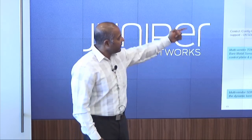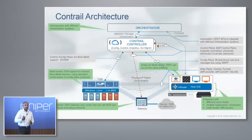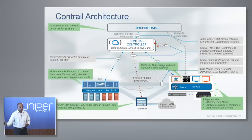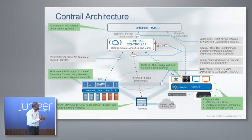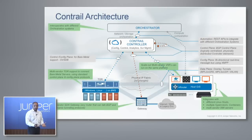The other element the Contrail controller peers with is a gateway — the MX gateway in our case. That is where all the tunnels terminate and can go out to the internet or a VLAN environment. We support multiple overlay protocols — GRE, UDP, VXLAN — and we do this in a very multi-vendor fashion to give customers freedom of choice, whether we are talking about different Linux distributions like Ubuntu, CentOS, or Red Hat.